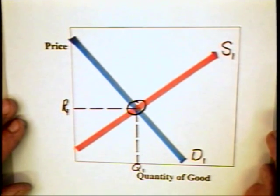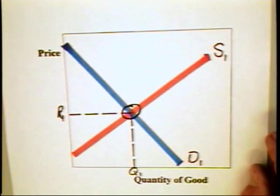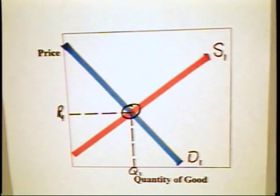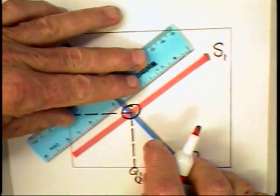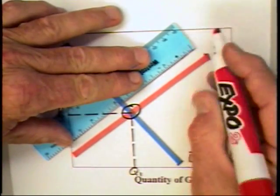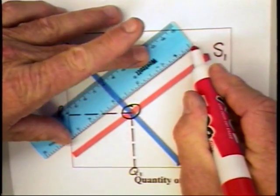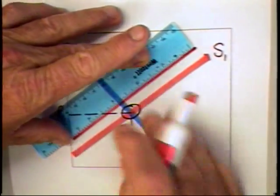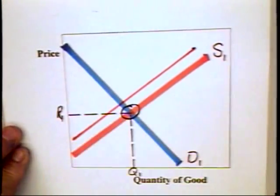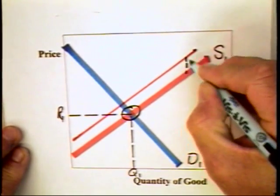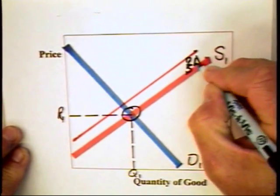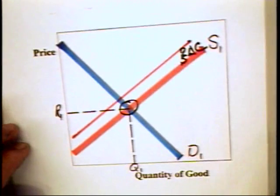Let's suppose that landlords consider improving the maintenance of their rental units. They know that the increased maintenance is going to increase their cost, so the supply curve is going to decrease, reflecting the greater increase in cost. The greater cost is equal to this here, the change in cost due to greater maintenance.